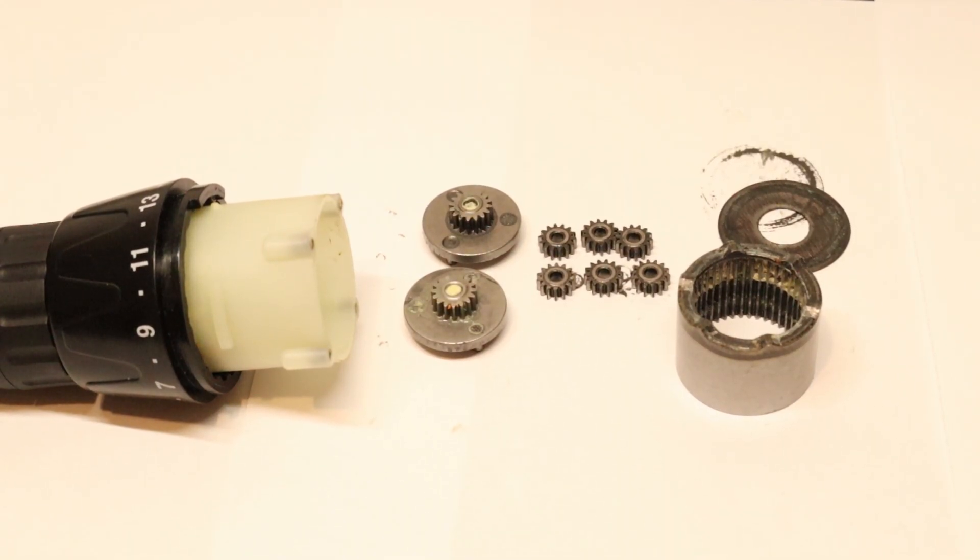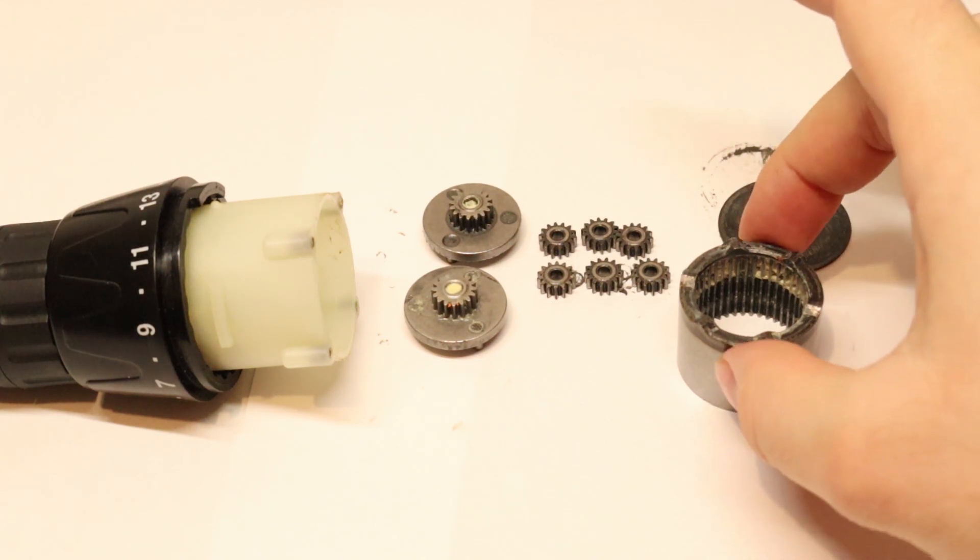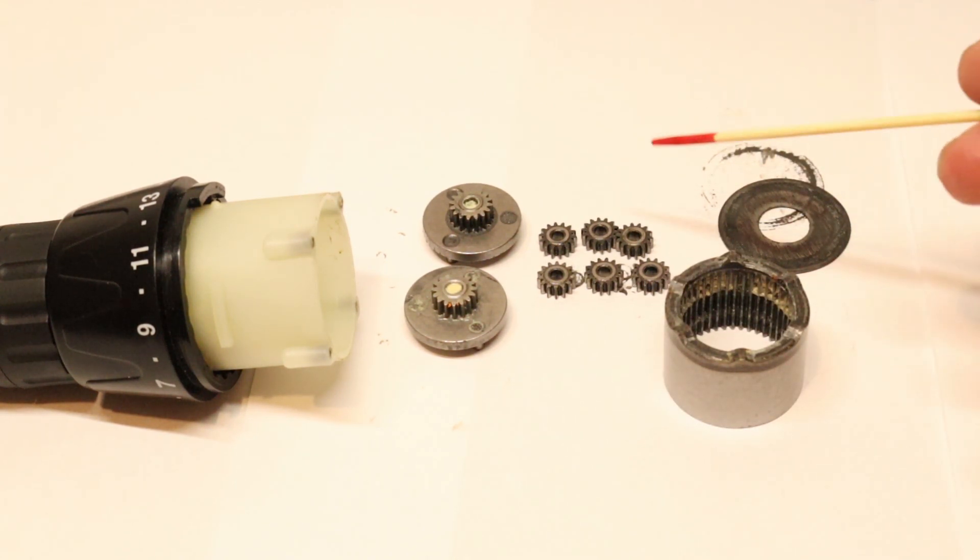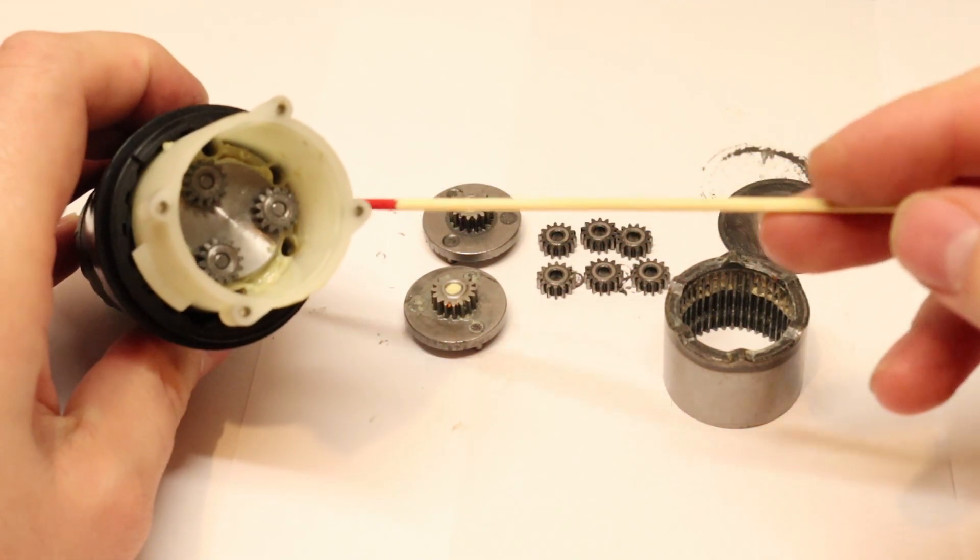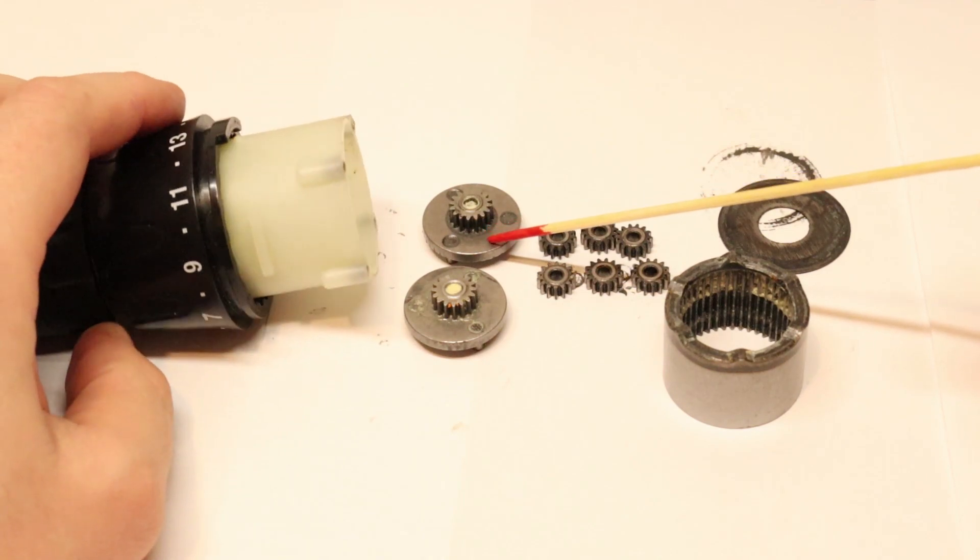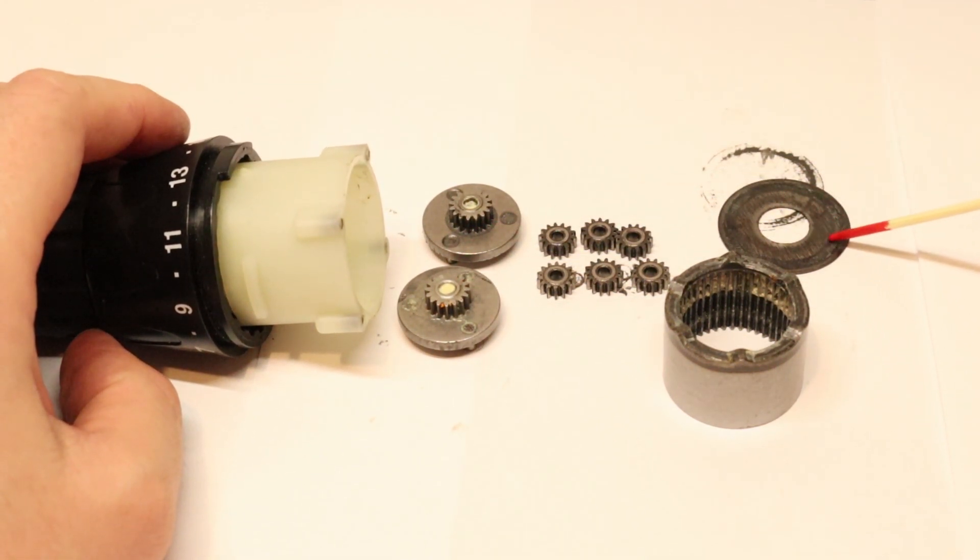If you disassemble the drill, you'll have the motor and the outer gear. You'll have six thinner gears and three thicker gears. Don't mix them up. You have two reduction adapters and a hardened ring.